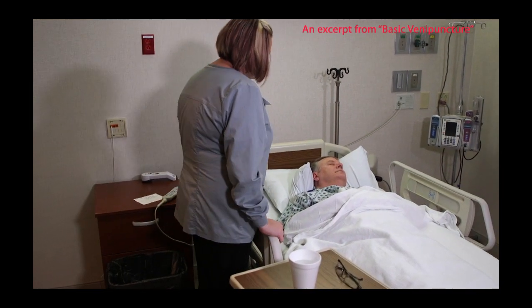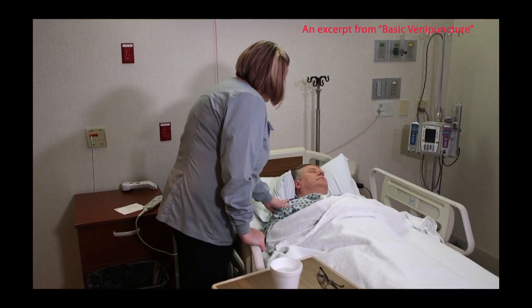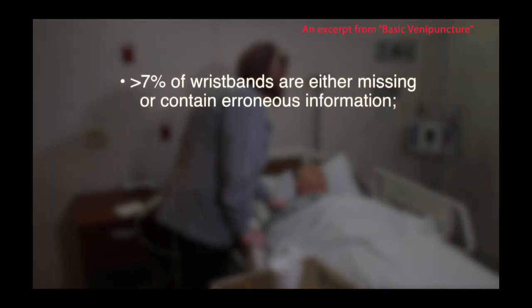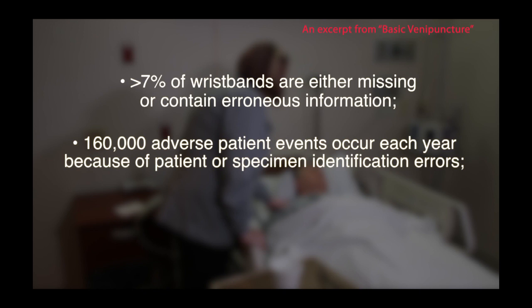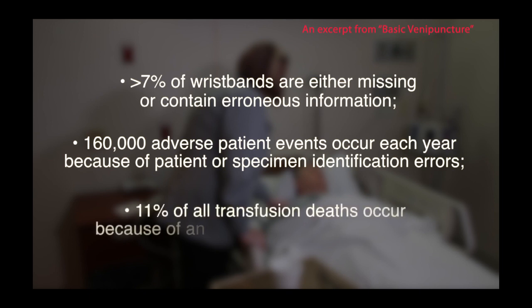Failing to follow the standardized protocol for identifying patients can be catastrophic. Studies show over 7% of wristbands are either missing or contain erroneous information about the patient. 160,000 adverse patient events occur each year in the U.S. because of patient or specimen identification errors involving the laboratory. 11% of all transfusion deaths occur as a result of the phlebotomist not properly identifying the patient or mislabeling the tube of blood.